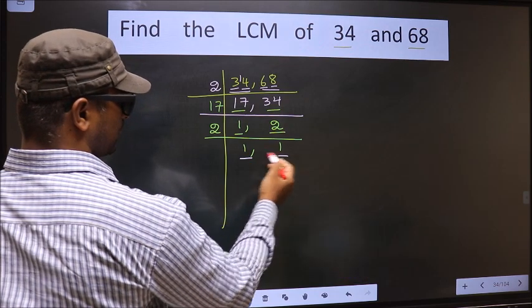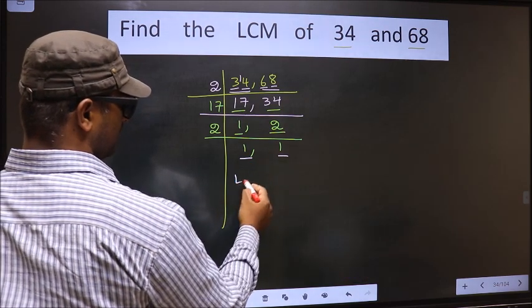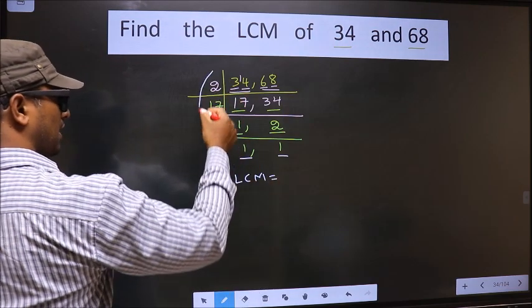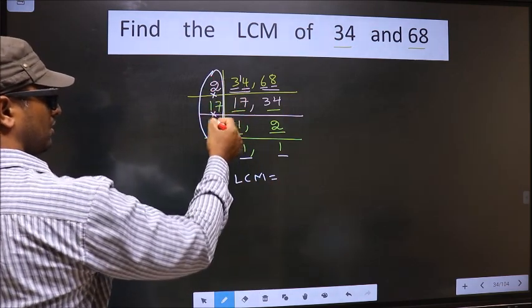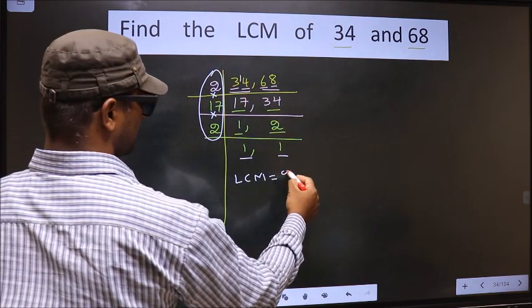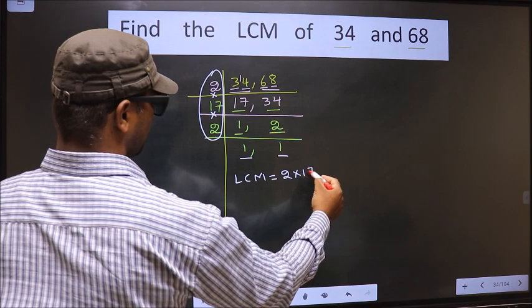We got 1 in both places, so our LCM is the product of these numbers. That is 2 times 17 times 2.